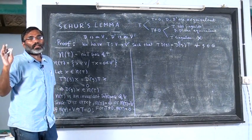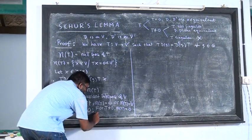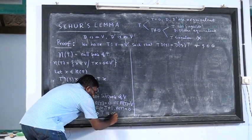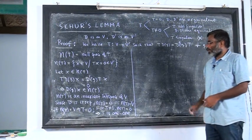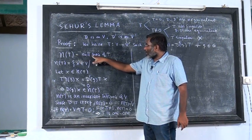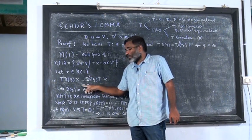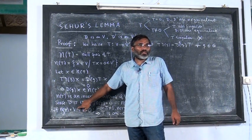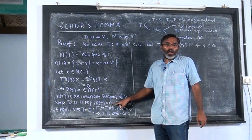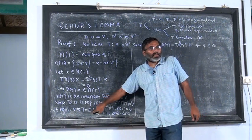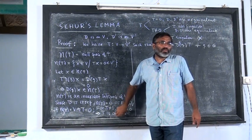If the null space of any transformation T equals 0, then T is a one-to-one mapping. So for T not equal to 0, N(T) equals 0 implies T is 1-1. From this argument using the null space, we showed that N(T) is an invariant subspace. Since the representation is irreducible, we cannot have a nontrivial invariant subspace, so the null space is either 0 or the full space. If it is the full space, T is 0; for a non-zero transformation, T must be one-to-one.